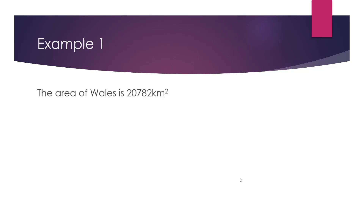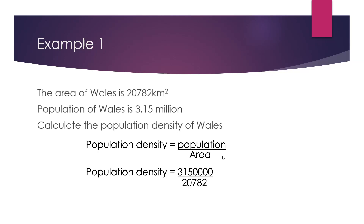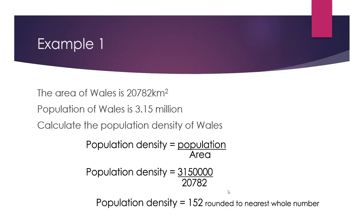So let's have a look at how this works. The area of Wales is 20,782 kilometres squared, and the population is 3.15 million. We're going to calculate the population density of Wales using our formula, swapping in the actual numbers. So we put 3.15 million divided by 20,782 into our calculator, and that gives us a population density of 152 — rounded to the nearest whole number — meaning there are 152 people per kilometre squared in Wales.